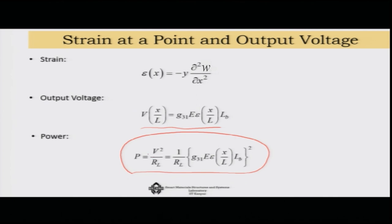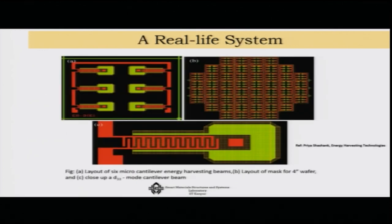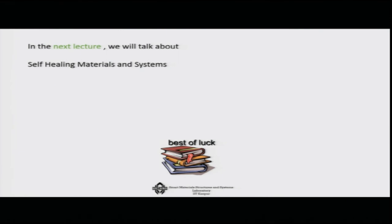Once we can find the power output, we know how to design such a system to draw maximum power. In a real-life system there may be not just one harvester, but hundreds or thousands integrated together to form a complete energy harvesting system. This is shown as a layout of a 6 micro-cantilever energy harvesting system, with a layout mask for a 4-inch wafer and a close-up view of the device.